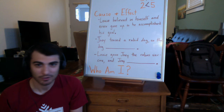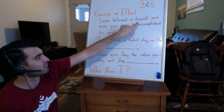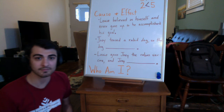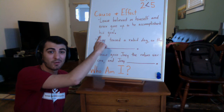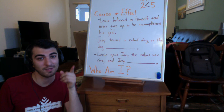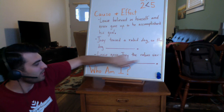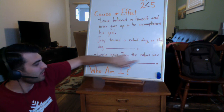We also see cause and effect in our story. The first: Louis believed in himself and never gave up, so he accomplished his goal. The effect was he accomplished his goal; the cause was believing in himself and never giving up. There are two others I've started where I've given you the cause, and I'm curious if you can tell me what the effect is. Joey teased a rabid dog, so the dog blank. Louis gave Joey the rabies vaccine, and Joey blank. Go ahead and complete those cause-and-effect sentences and share them with me. If you can think of another cause-and-effect relationship in that short story, share that as well.